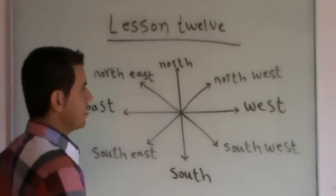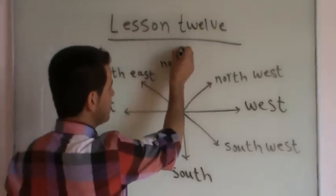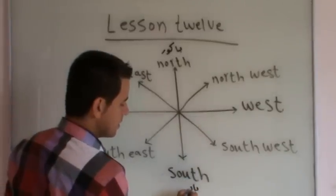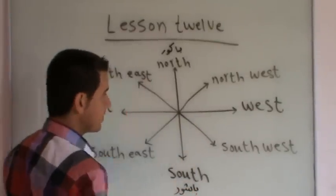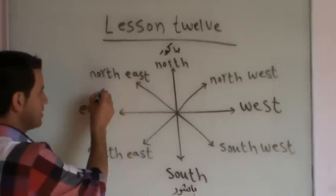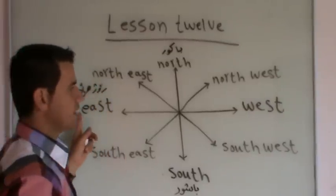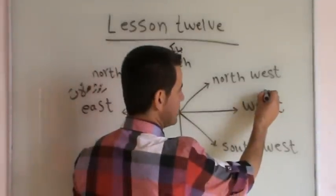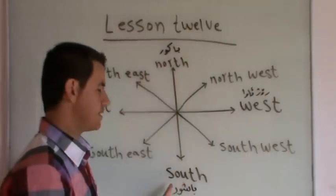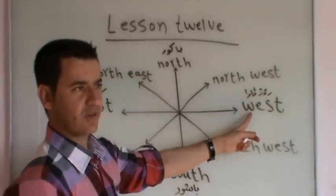Let's talk about the English language. North is Bakur. South is Bashur. East means Rochalat. West means Rojava. North is Bakur, South is Bashur, East means Rochalat, West means Rojava.